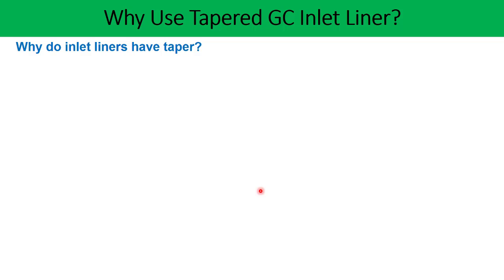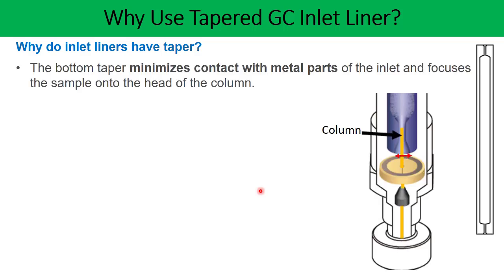The topic of today's discussion is: why do inlet liners have a taper? What is the purpose of using the taper in the liner? The first important point is that the bottom taper minimizes contact with the metal parts of the inlet and focuses the sample onto the head of the column. In the diagram you can see the column, and here is the taper near the cursor. Because of this taper, the sample is able to get focused onto the head of the column, and also minimizes contact with the metal parts. The size of the sample band gets narrowed because of this narrow taper.